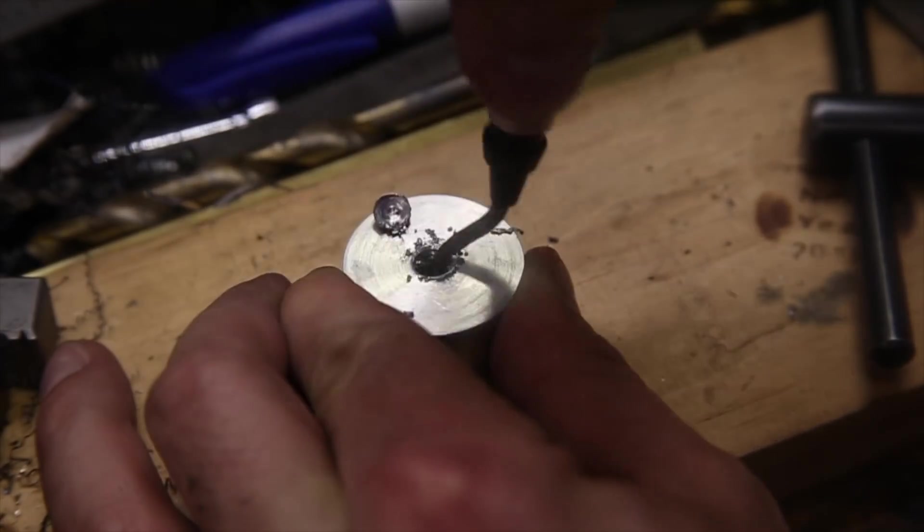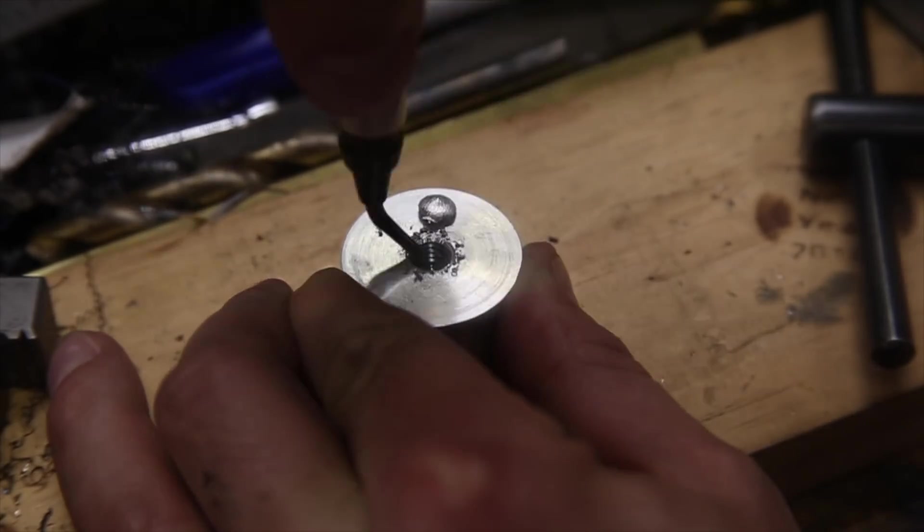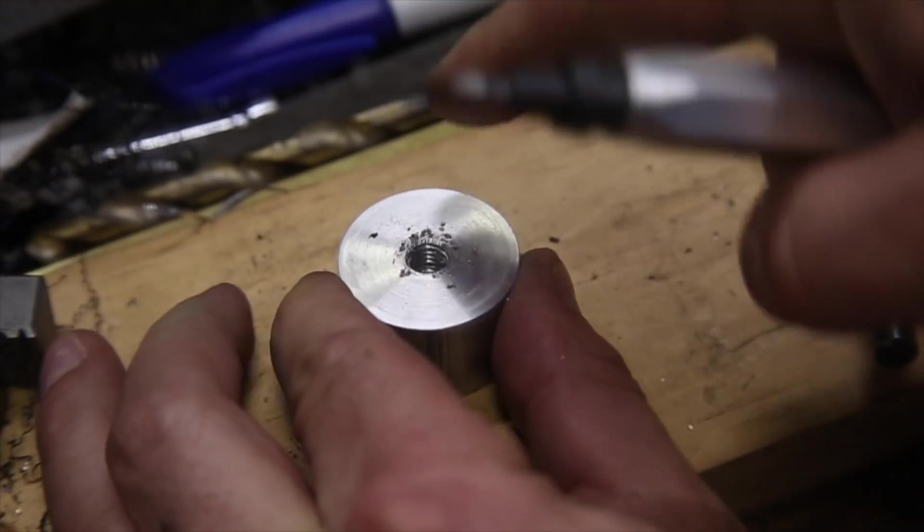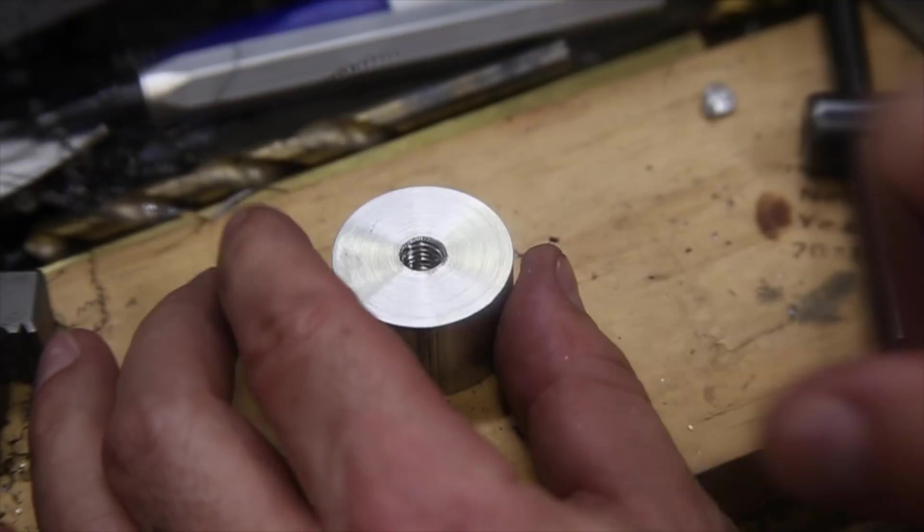Anyway, this threaded hole is going to serve two purposes, the first of which will help me mount it to the clamp in the centered and static position so I can mark the position of the three mounting holes.